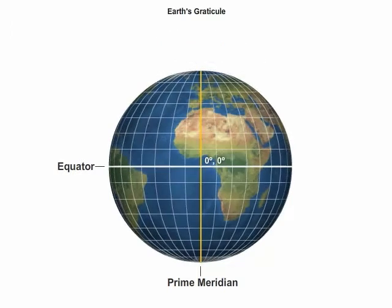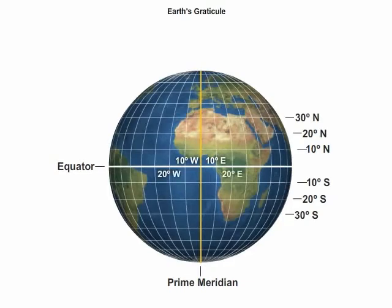Every location on the Earth can be defined by its latitude and longitude. You can think of the Graticule as Earth's address system. The values for latitude express their distance north and south from the equator, while the values for longitude express their distance east and west from the prime meridian.